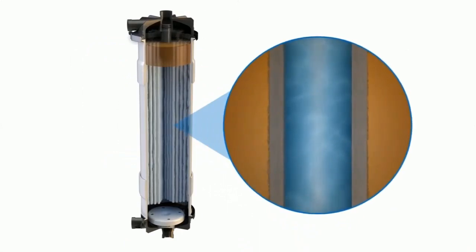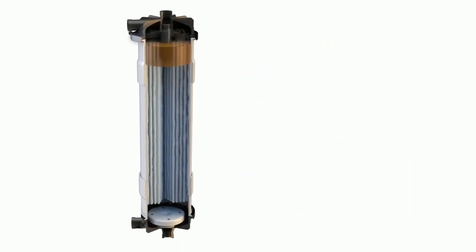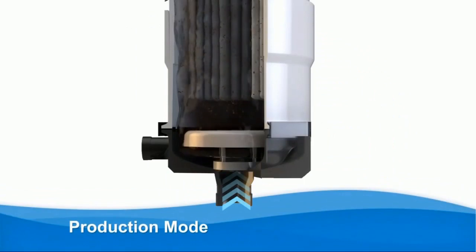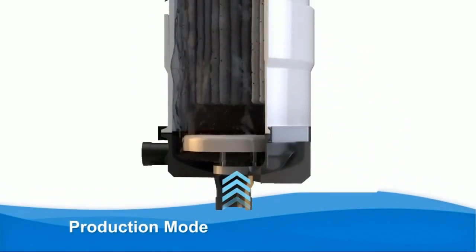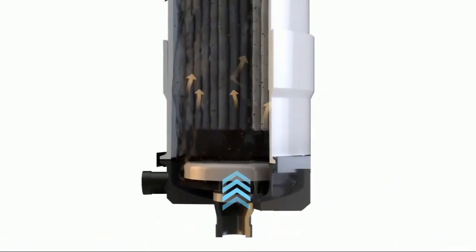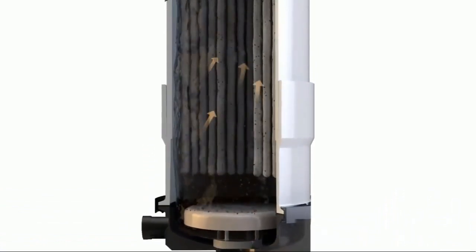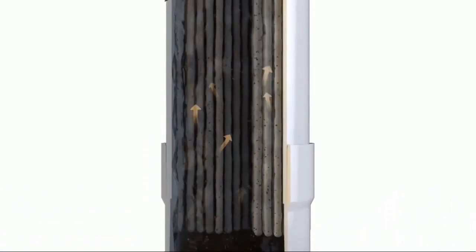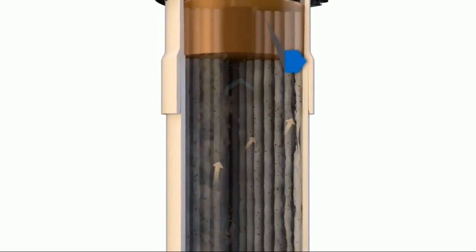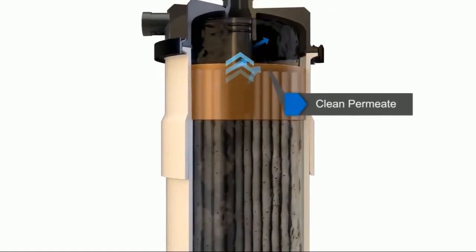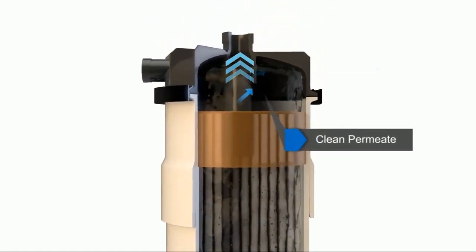The Deaphos filtration system operates in dead-end mode with outside to inside flow pattern. In production mode, feed water enters from the bottom of the cartridge and flows under pressure through the length of the pipe. Clean permeate simultaneously exits the top of the cartridge with solids concentrated within the housing. This unique approach allows for high system feed water recovery.